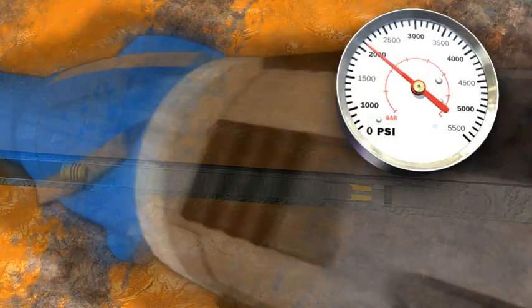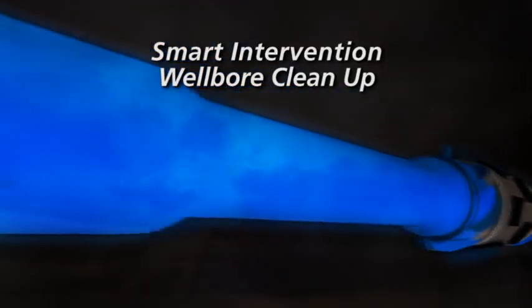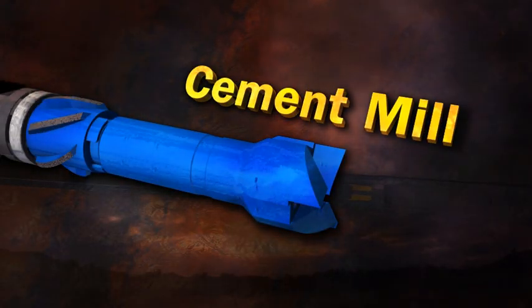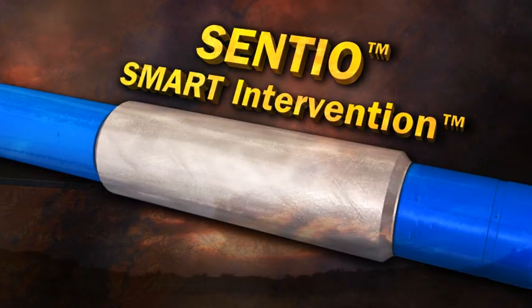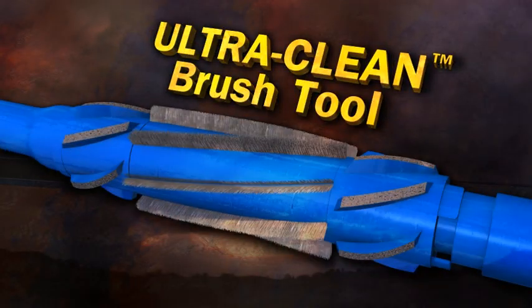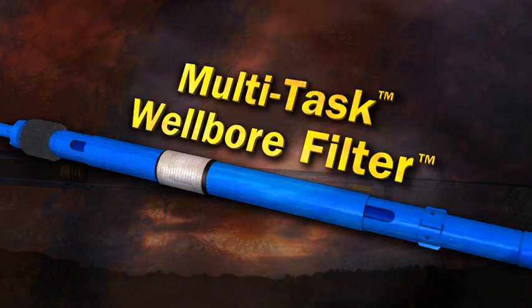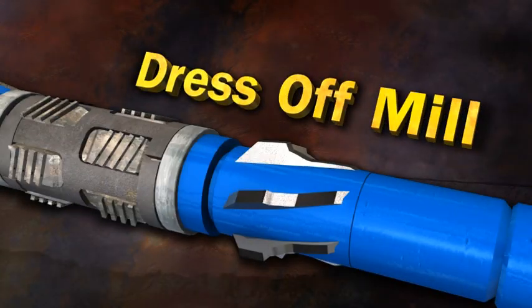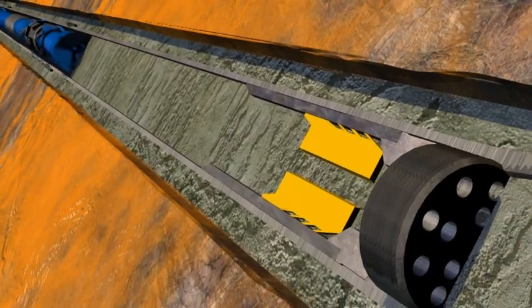After cementing the production liner, a combination milling and clean out run is performed. The Smart Intervention bottom hole assembly consists of many Baker Hughes components, including a cement mill, wellbore cleanup scrapers, Smart Intervention Centio and Gamma Ray subs, wellbore cleanup brushes, multi-task filter, Grabits downhole magnets, and a liner top dress off mill with upper casing brushes and scrapers.